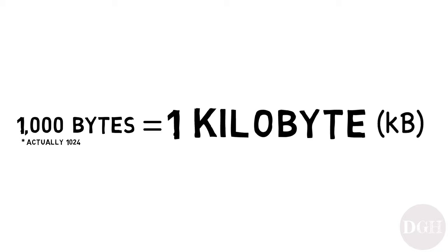I'll mention just once that there are actually 1,024 bytes in a kilobyte, because digital storage uses the binary system and everything is expressed in powers of two. That said, it's okay to just think of a kilobyte as a thousand bytes, similar to how a kilogram is a thousand grams or a kilometer is a thousand meters.